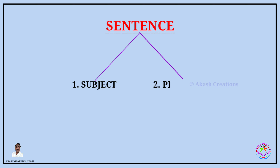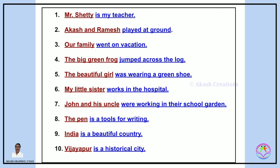Sentences have two parts. The first part is the subject and the second part is the predicate. The subject contains a noun or pronoun, and the predicate contains a verb — the action or kriyapada. We will now see some more examples of subject and predicate.